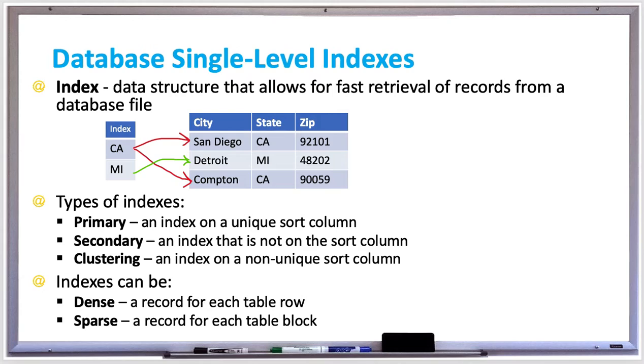A single level index is usually defined on a single column, but a multi-column index is where each index is a composite of multiple index column values.